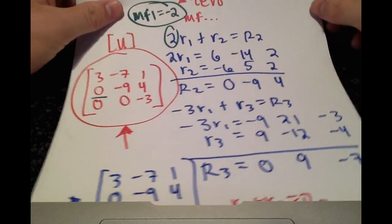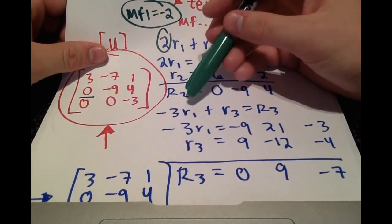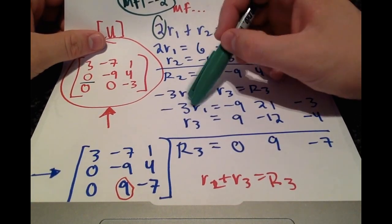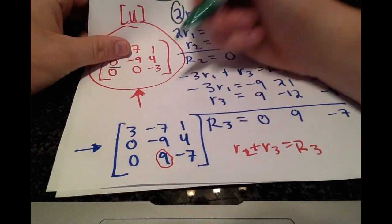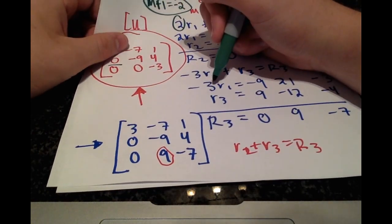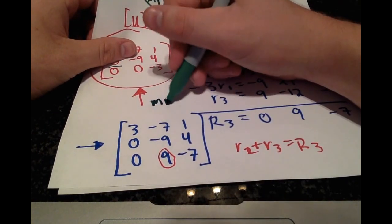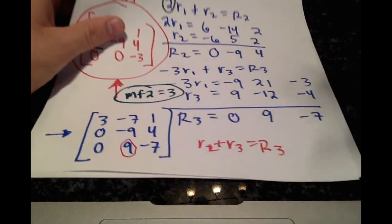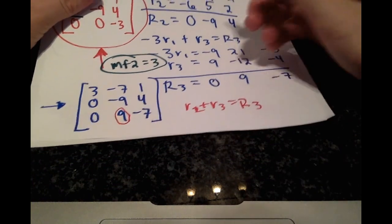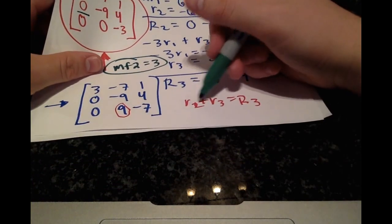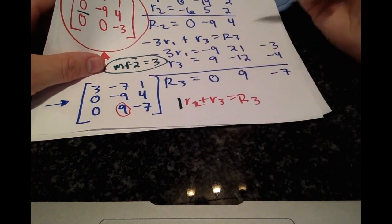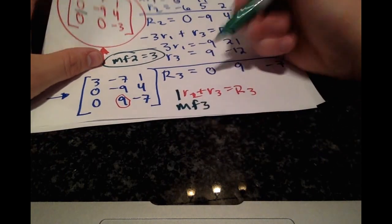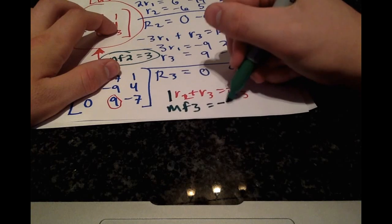And then the multiplication factor 2 will come from what our next step was. We multiplied row 1 by negative 3. So the negative of that, the negative of negative 3 is just 3. So multiplication factor 2 is just 3. And the last step here, we multiplied row 2 by just 1 and added that to row 3. So multiplication factor 3 is just going to be negative 1.